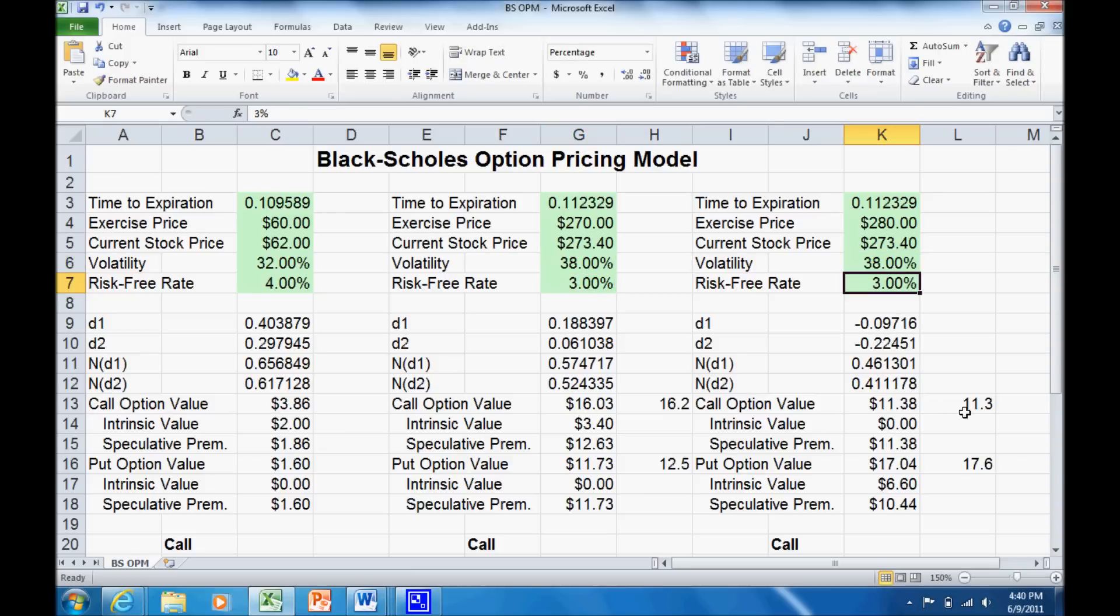Now here you can see we're pretty much on target. We're off by a few cents. And here we're pretty much on target, maybe a little under. Try 39%.